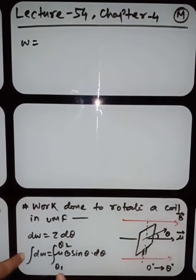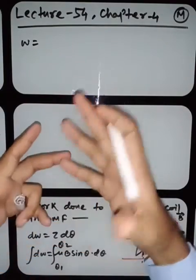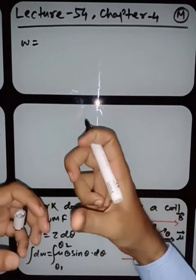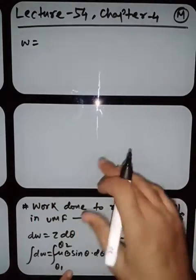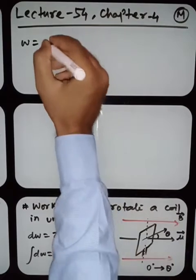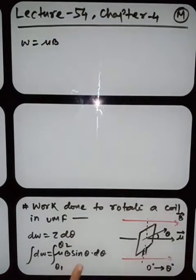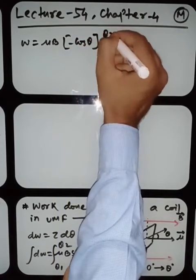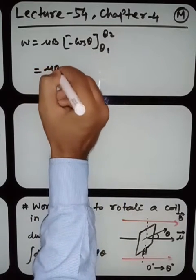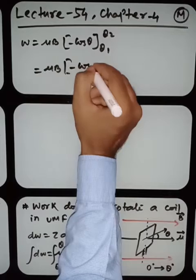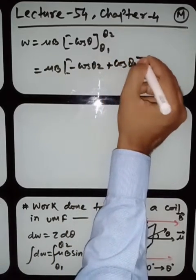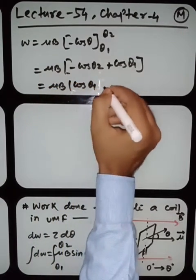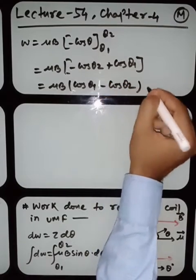The total amount of work done to change the orientation is stored as potential energy. Taking μB as constant, integration of sinθ gives −cosθ, so W = μB[−cosθ₂ + cosθ₁] = μB(cosθ₁ − cosθ₂). If we rotate from θ₁ = 0° to some angle θ, then W = μB(cos0 − cosθ) = μB(1 − cosθ). This is the work done to rotate a current carrying coil inside a magnetic field.